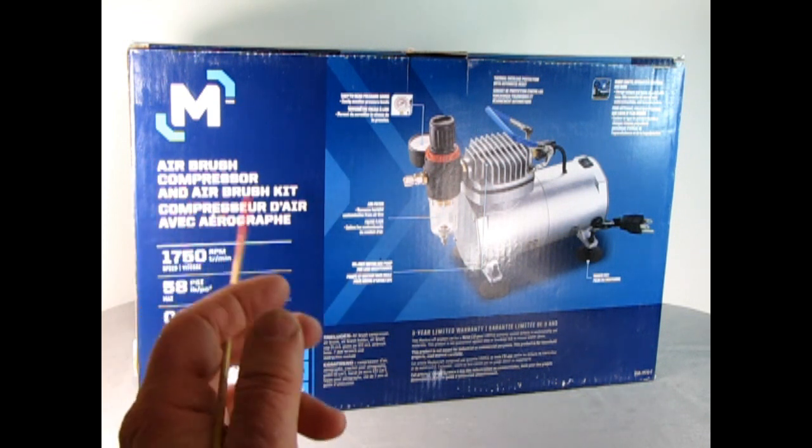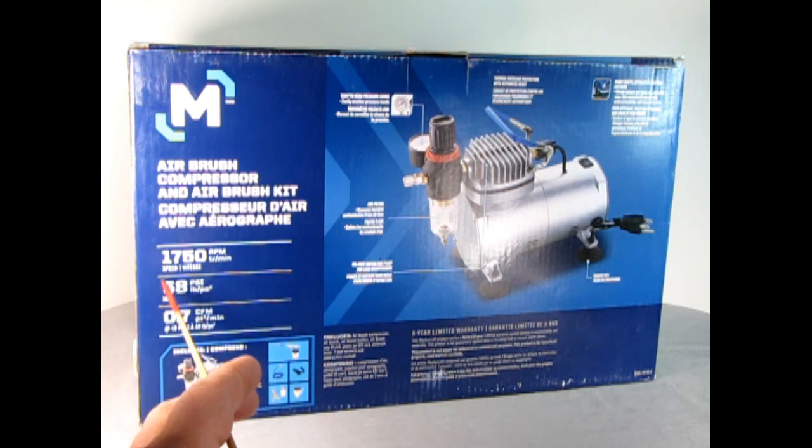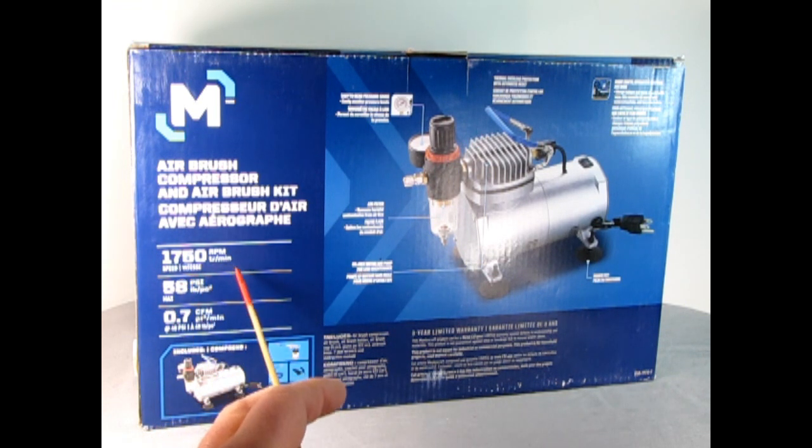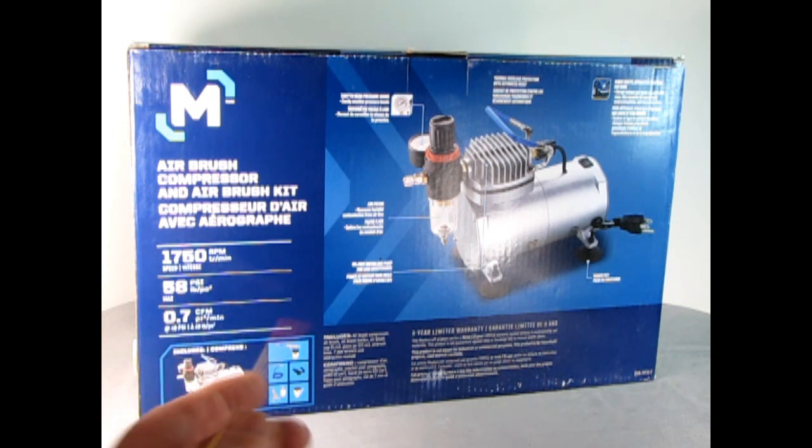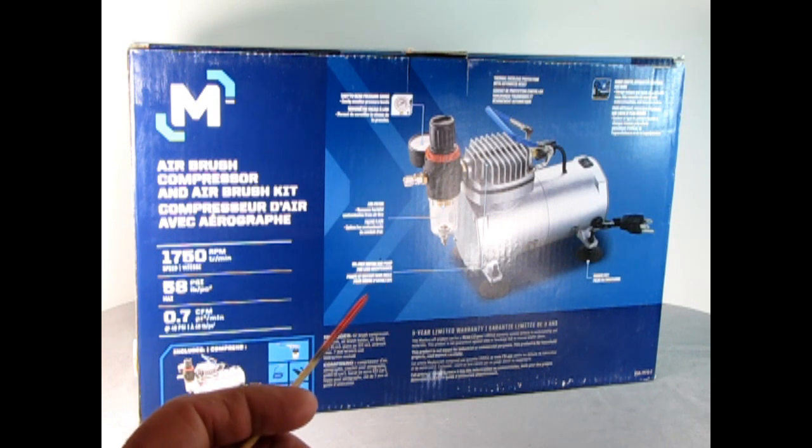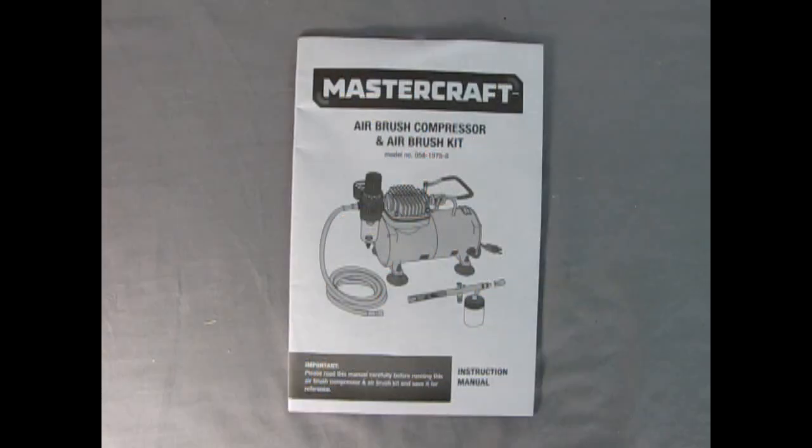The specs are 1750 RPM, 58 PSI air pressure, and 0.7 CFM at 40 PSI. I believe that is the air coming out of the hose. If you know a little bit better on this, let me know in the comments section. I'm going to open the box and take the parts out and take a look that way.